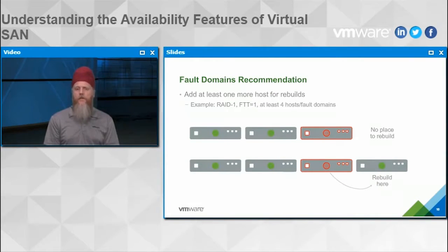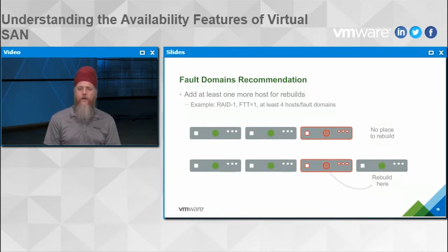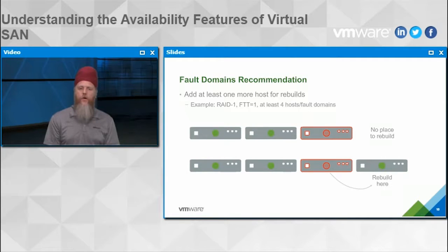For fault domain recommendations, ideally you want to have a host available for rebuilds. While you could use just three hosts with failures to tolerate equals one in RAID 1, if one host has a problem or needs to be taken down for an extended period, you won't have an additional location for component rebuilds. Having four hosts or four fault domains gives you that extra level of availability.